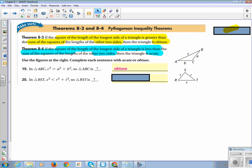When the hypotenuse squared is less than the sum of the squares of the legs, you get an acute triangle.